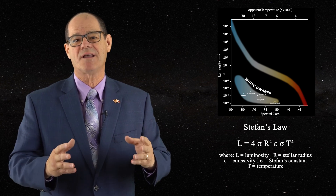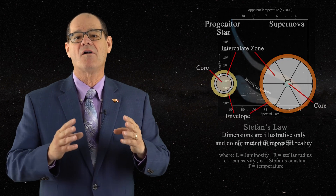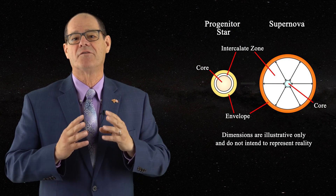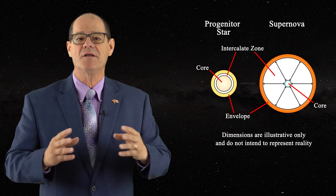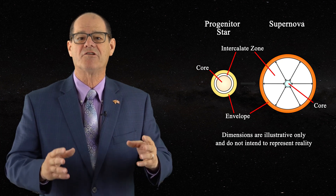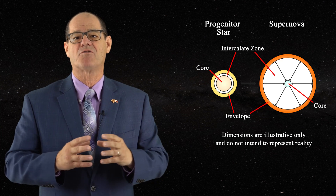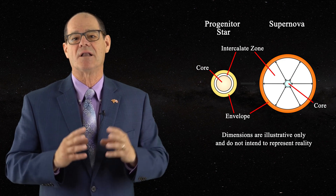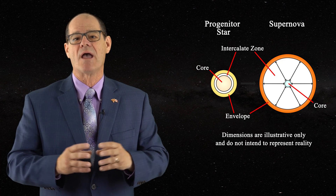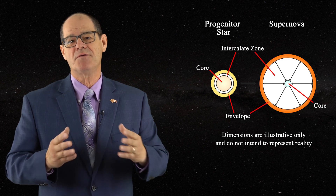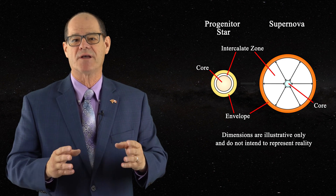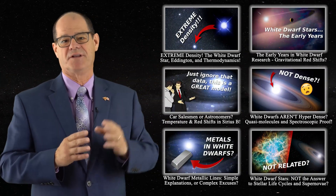I also presented the idea that supernovae are likely to be produced by the exfoliation of simple stars. The intercalate region rapidly expands, throwing off the outer envelope of the star, resulting in an outer expanded envelope and a central star. In reality, white dwarf stars are extremely unlikely to be hyperdense, as was revealed through this series of videos.